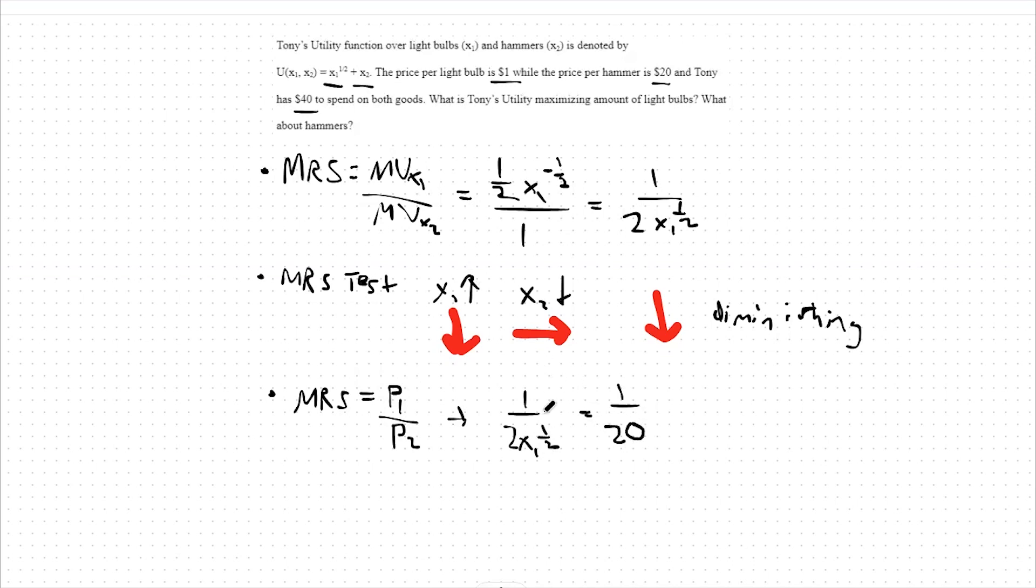From there, that will be 1 over 2x1 to the 1 half equals 1 over 20. If 1 over 2x to the 1 half equals 1 over 20, then 2x to the 1 half equals 20. This means x to the 1 half equals 10. Square both sides. x1, optimally, is 100.